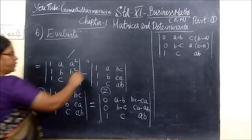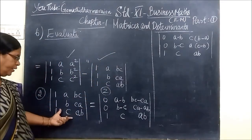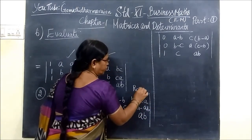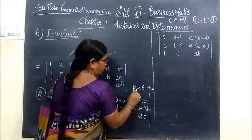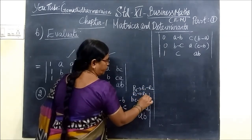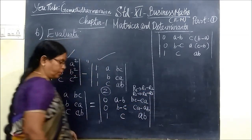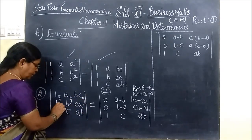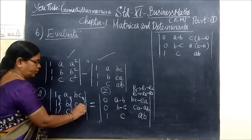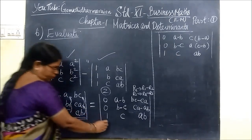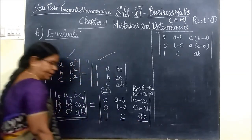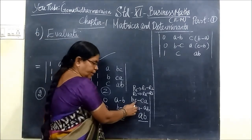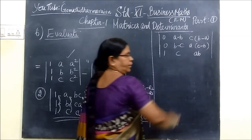Now we consider the second part. The second part is done the same way. We apply R1 equal to R1 minus R2, then R2 equal to R2 minus R3. So in each element, you subtract accordingly. In the third row, you keep it as it is.